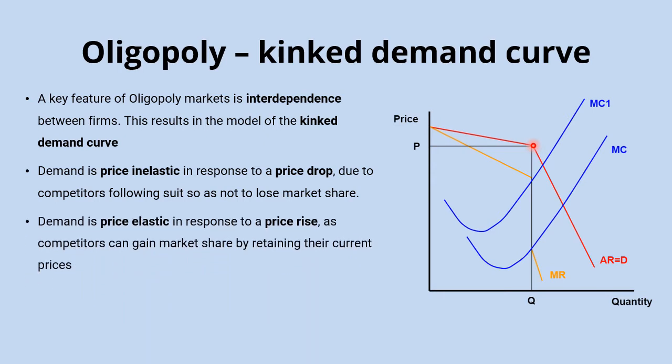If the oligopolist increases prices, demand is relatively price elastic. Rivals will simply keep their prices the same and watch the firm lose customers — those customers will think they have three, four or five other options and switch to rival oligopoly firms. So the price increase has a big impact on quantity demanded, giving a shallower slope above the kink.